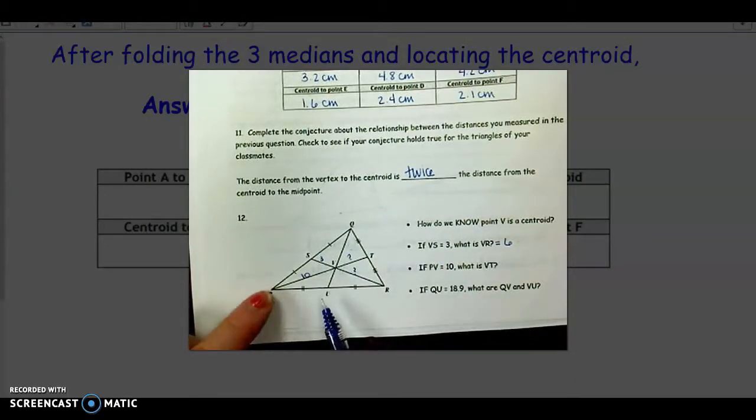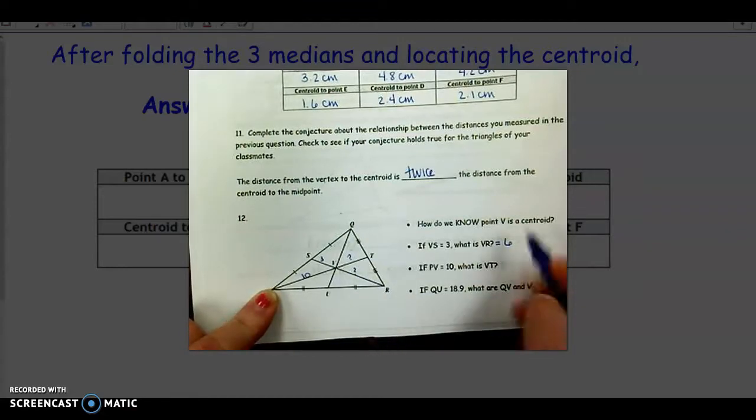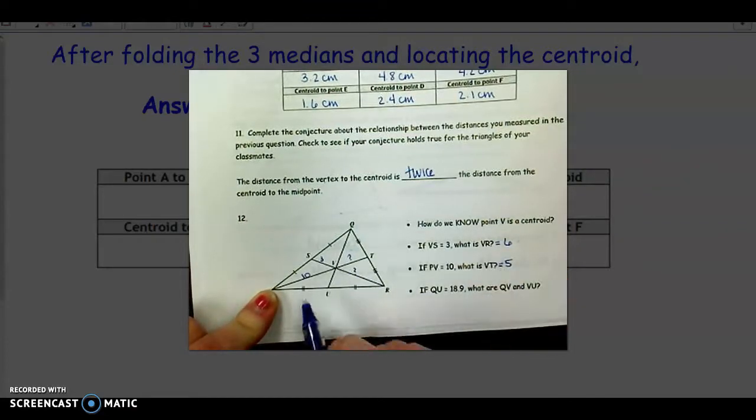Well, again, we learned from vertex to centroid is twice as much as centroid to midpoint. So this time, we're given the twice as much. So in order to find V to T, we're going to have to actually take half this time. So V to T would be 5. This is twice as much as 5.